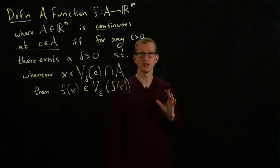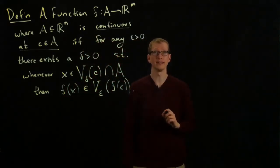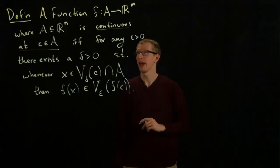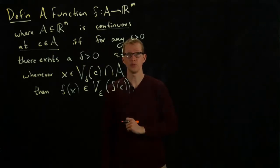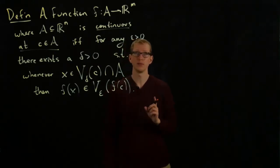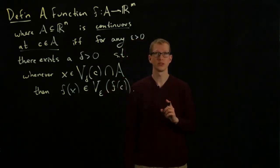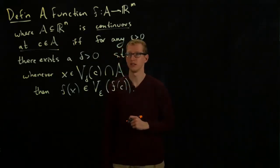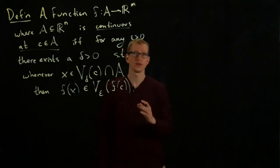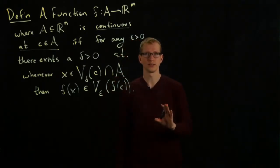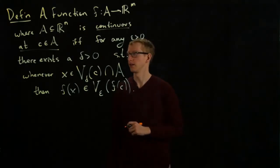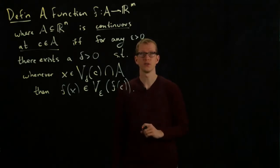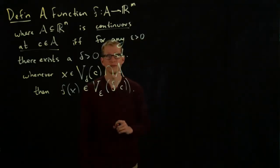the image of X under the function F is contained in the epsilon neighborhood around the image of C. This definition is incredibly similar to the definition of a limit for a function, and when a function is continuous and C is a limit point, then you can check that the limit of F as X approaches C is in fact F of C. However, the definition of continuity does not require the point C to be a limit point, and in fact, if it is an isolated point, you should be able to check that a function is continuous at every isolated point on its domain of definition.